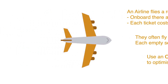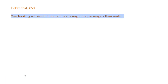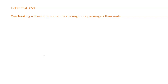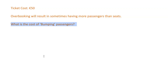Each ticket costs 50 euro. It's likely that if they use overbooking, every so often they might sell a number of extra tickets, and it's possible that every passenger who actually bought a ticket will show up and expect their seat. This means that they may have to bump passengers off flights — explaining that they've sold their seat and will have to put them on the next available flight.